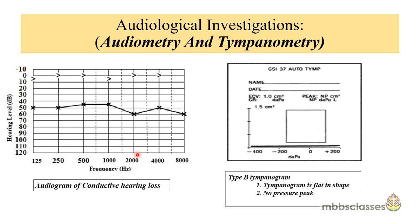In cases of adenoids, tympanometry typically shows a B-type tympanogram. The tympanogram is flat in shape with no pressure peak — the peak is marked as NP, meaning no pressure peak. These are the two typical audiological findings we get in a case of adenoids.